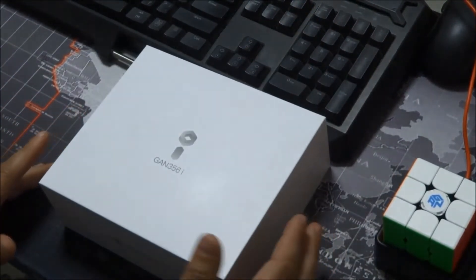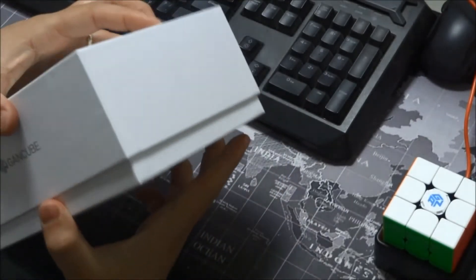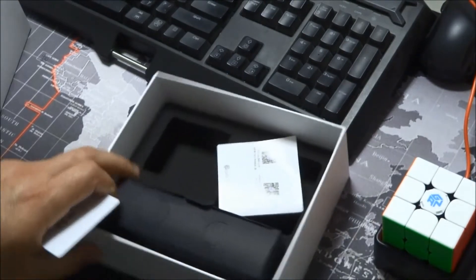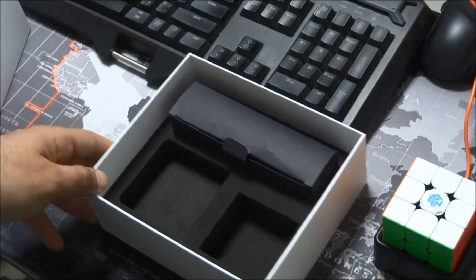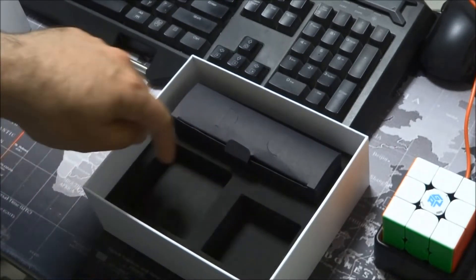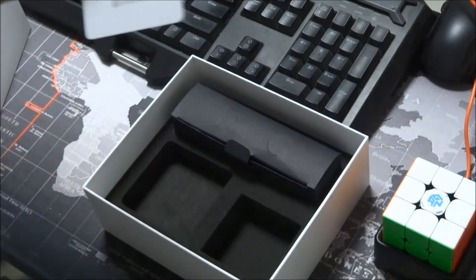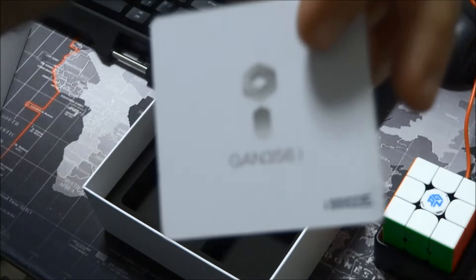Inside the box itself, let's see if I can open it again. There we go. This is the box. Originally what you get is the cube over here and the charger over here. You have this card that says GANS cube with QR code and the number of the cube itself.